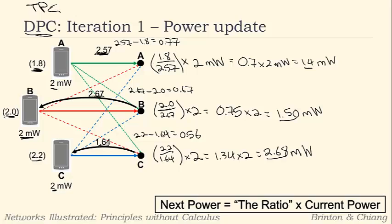This is the actual DPC update equation: the next power equals the ratio of desired SIR over measured SIR — where we want to be over where we are right now — multiplied by the current power. We apply this at each iteration as we keep measuring the SIRs.